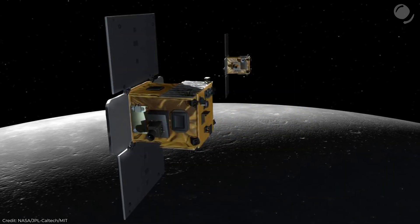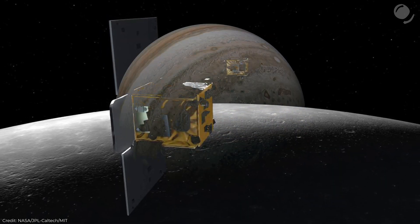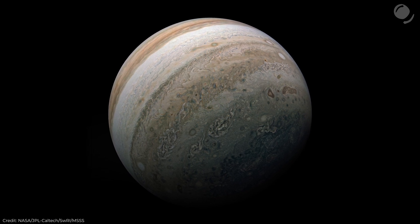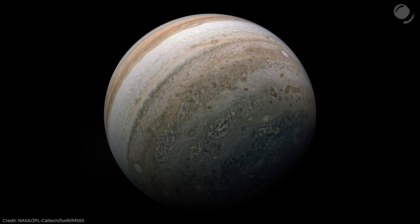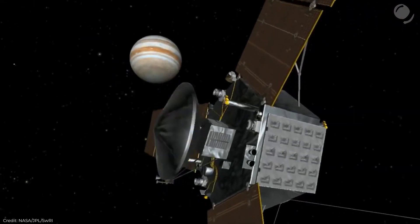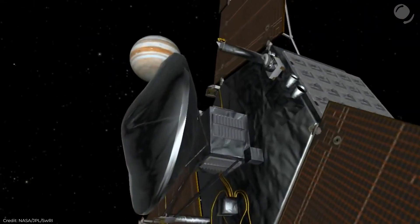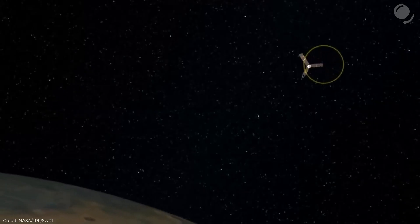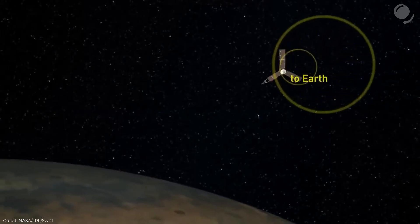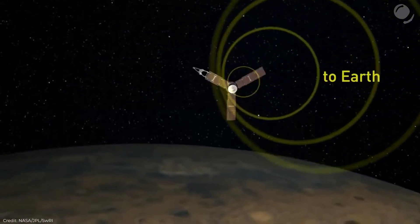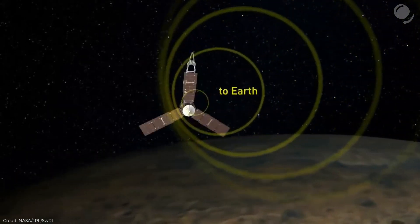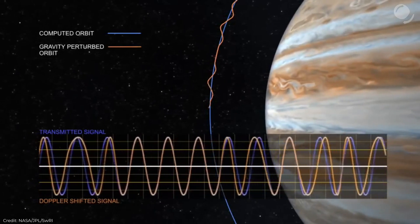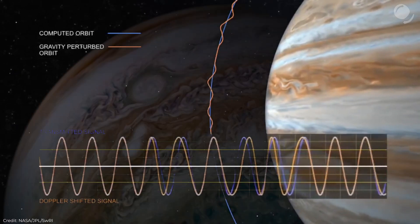There was also a similar Moon mission called GRAIL. We haven't sent such pairs of spacecraft to Jupiter, but still a somewhat similar principle was used there. When the Juno spacecraft flies above different parts of Jupiter with varying gravitational field, it affects the velocity of the spacecraft. And we can detect that by measuring the Doppler shift of signals coming from the spacecraft to Earth. And that helps us learn more about what's inside the planet.